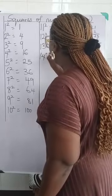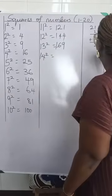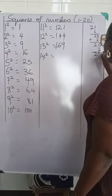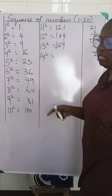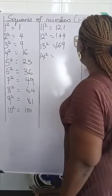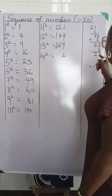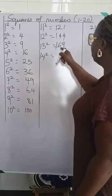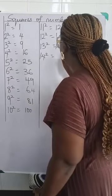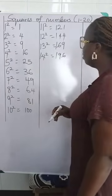14 squared, what do we do? We add our plus 2 here. We're going to have 27. 27 will add it to 169. We're going to have 7 plus 9, which will give us 6. You carry 1 to this. 2 plus 6 is 8 plus the one we'll carry is 9. And you bring down your 196.